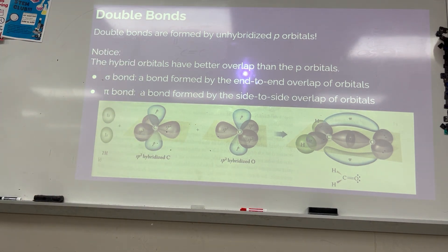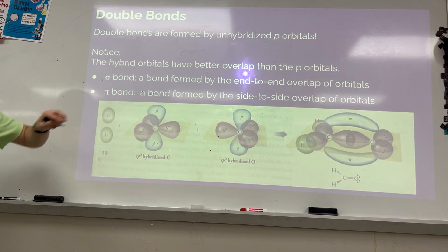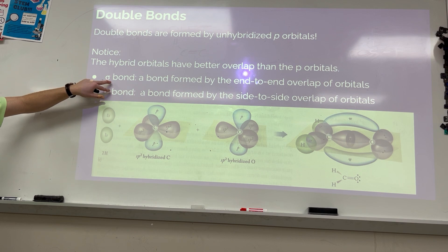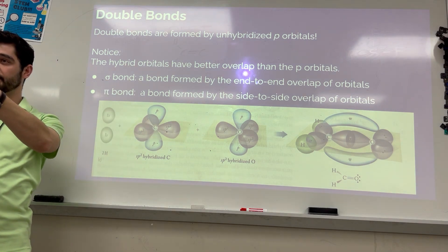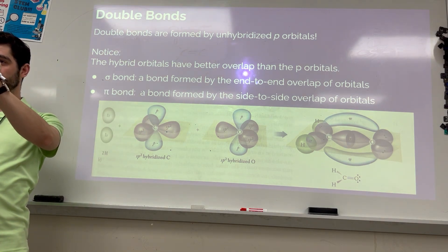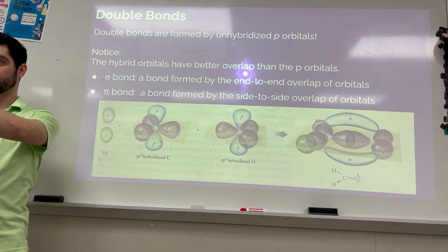So to summarize what we have so far: double bonds are made from p orbitals. We classify bonds based on how the orbitals overlap — if they overlap head to head, that's a sigma bond; if they overlap side to side, that's a pi bond.